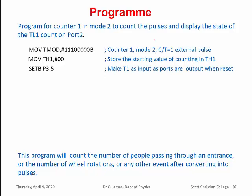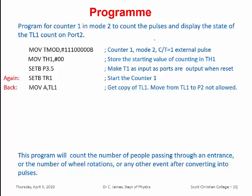Now let us set port P3.5 as 1, because when you switch on or reset the system, all ports will be output ports. In order to set this port as an input, we have to set this bit. Now the loop begins. Set TR1 — this is the timer run bit of the TCON register. When you set this bit, the timer automatically starts. The counting value is stored in the accumulator A, because the counter value cannot be moved to port 2 directly. So we store the counting value into A and then move A to port 2, which sends the data to the LED display.